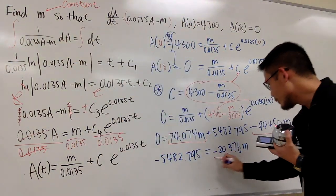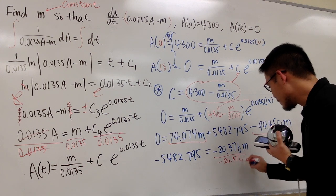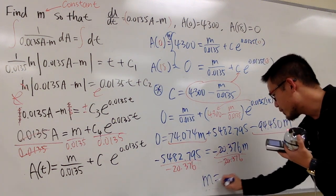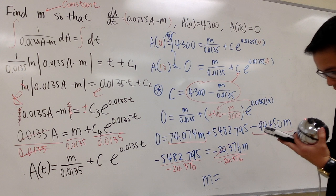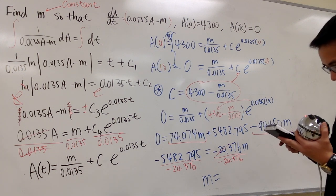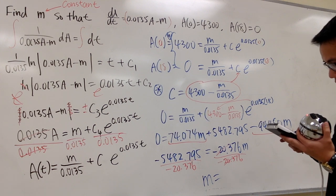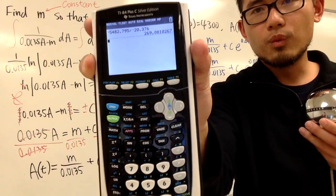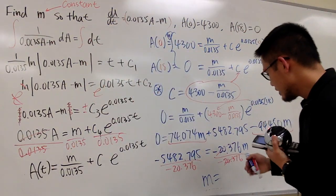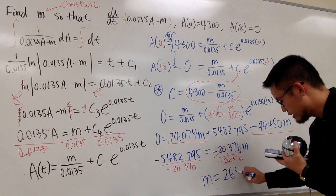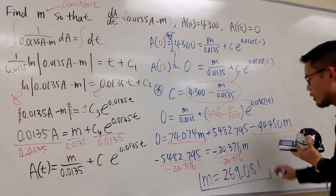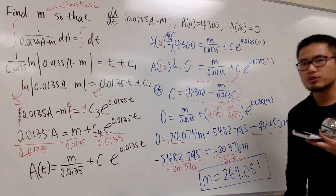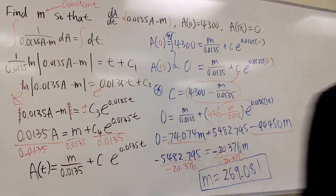Dividing both sides by negative 20.376: M equals negative 5482.795 divided by negative 20.376, which gives us M equals 269.81. This is the value of M. If you also want to find c, substitute this value back and work through the computation, but M is all we need.